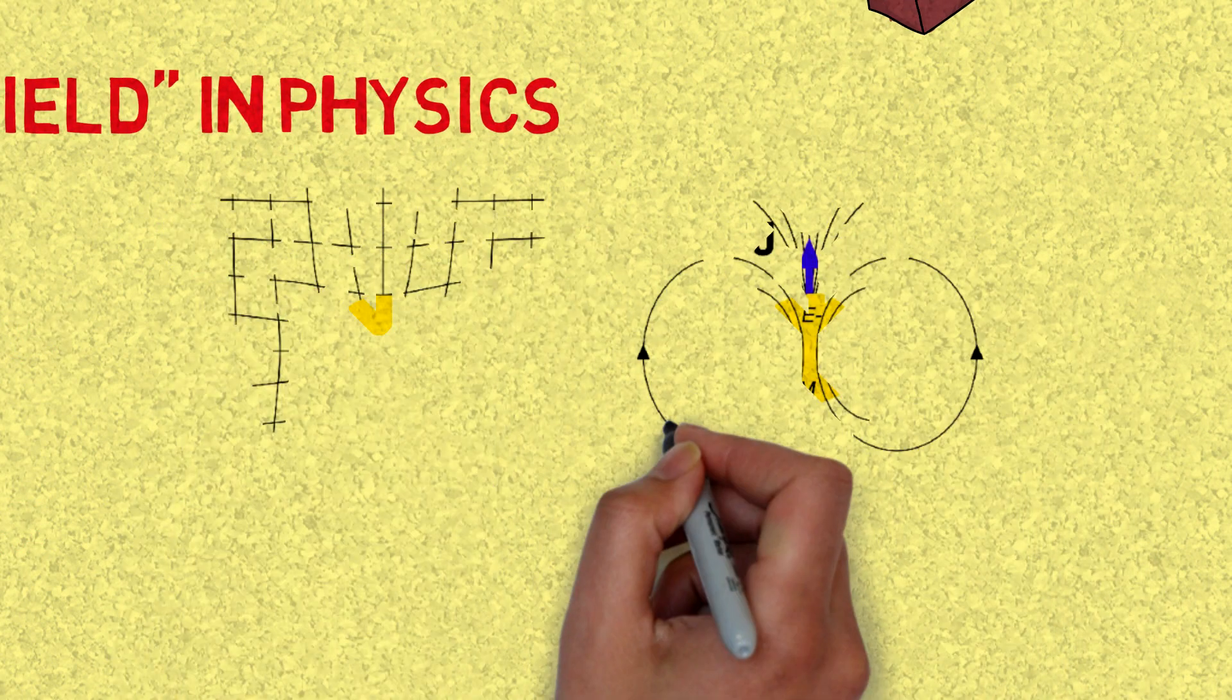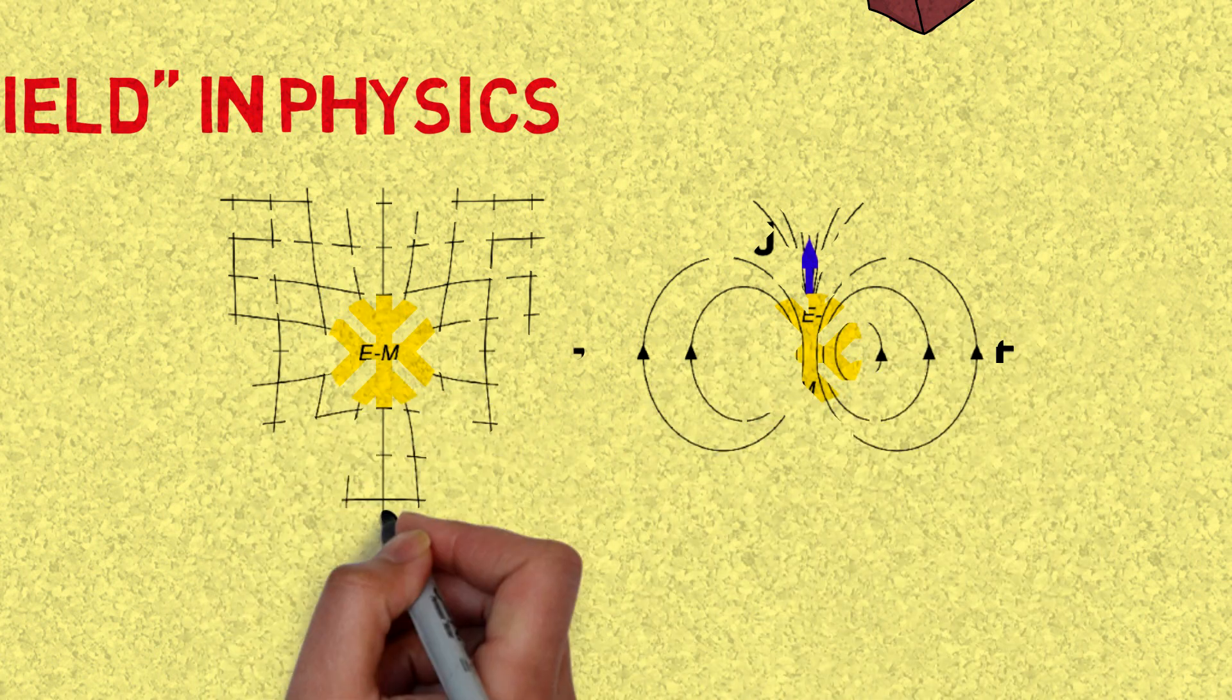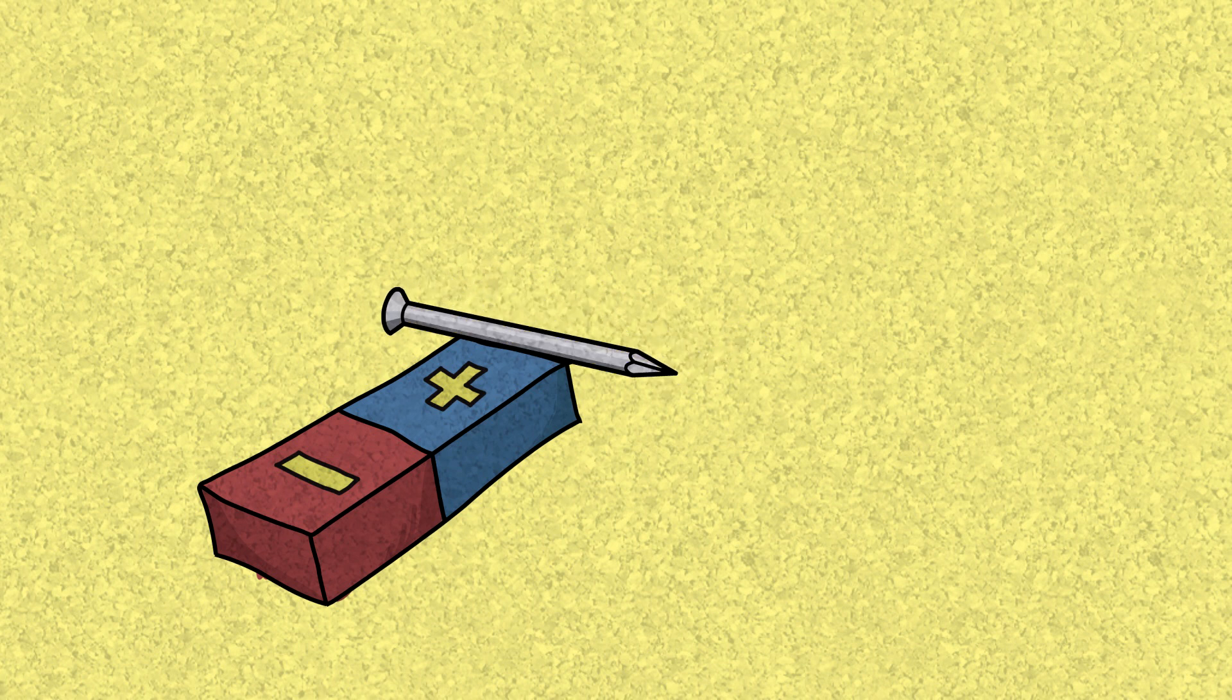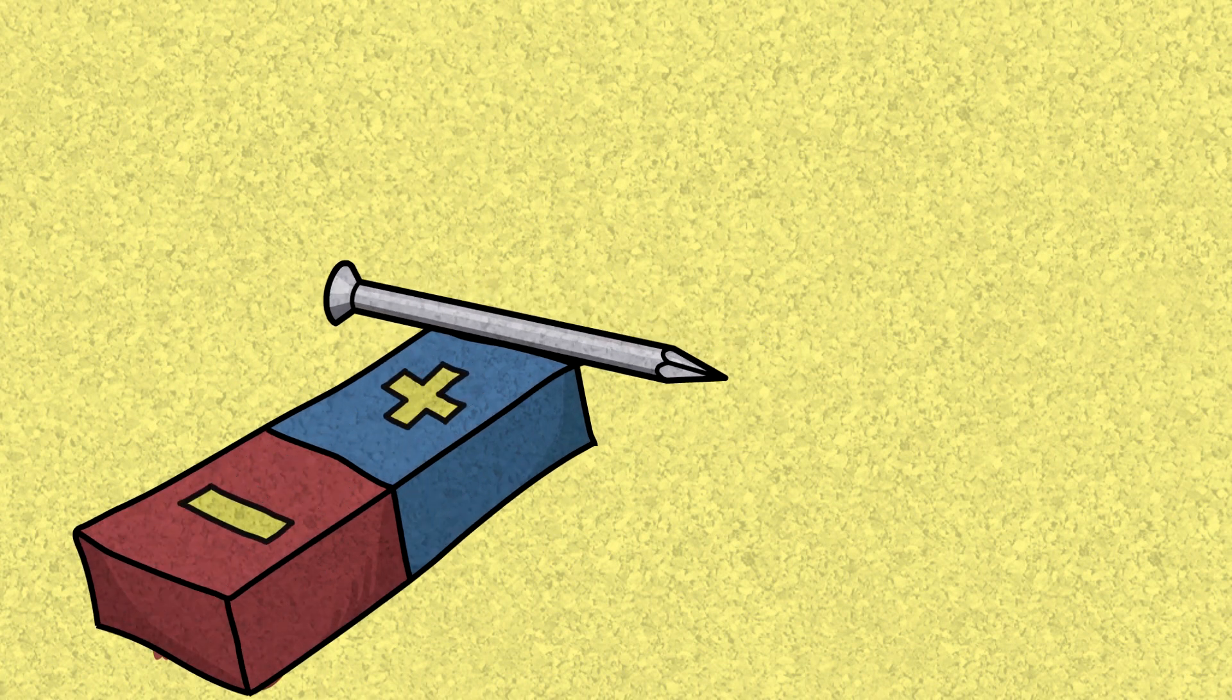Fields are an interesting mathematical construct in physics. The idea of a field probably came from the fact that there are forces that are clearly seen between two objects without requiring any physical contact. Like magnets.